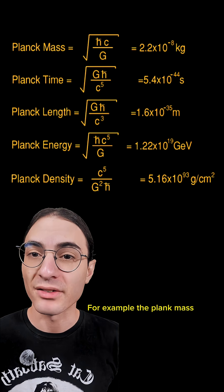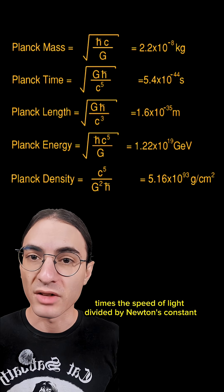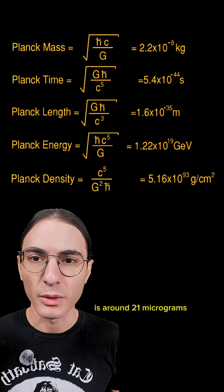For example, the Planck mass, which is the square root of the reduced Planck constant times the speed of light divided by Newton's constant, is around 21 micrograms.